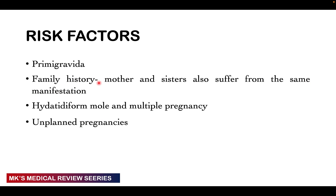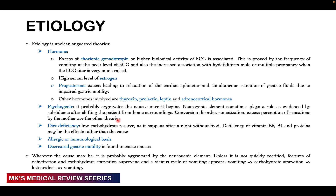Risk factors include primigravidas, a family history in a first-degree relative such as a mother or sister who suffered from the same condition, hydatidiform moles, and multiple pregnancies — which are associated with high levels of human chorionic gonadotrophin — as well as unplanned pregnancies. In the pathophysiology, the etiology is generally unclear, but excess chorionic gonadotrophin is associated with the condition, which is why we see it most commonly with hydatidiform moles and multiple pregnancies. High estrogen levels and the relaxing effect of progesterone on the cardiac sphincter — stimulating retention of gastric fluid and impairing gastric motility — have also been implicated.